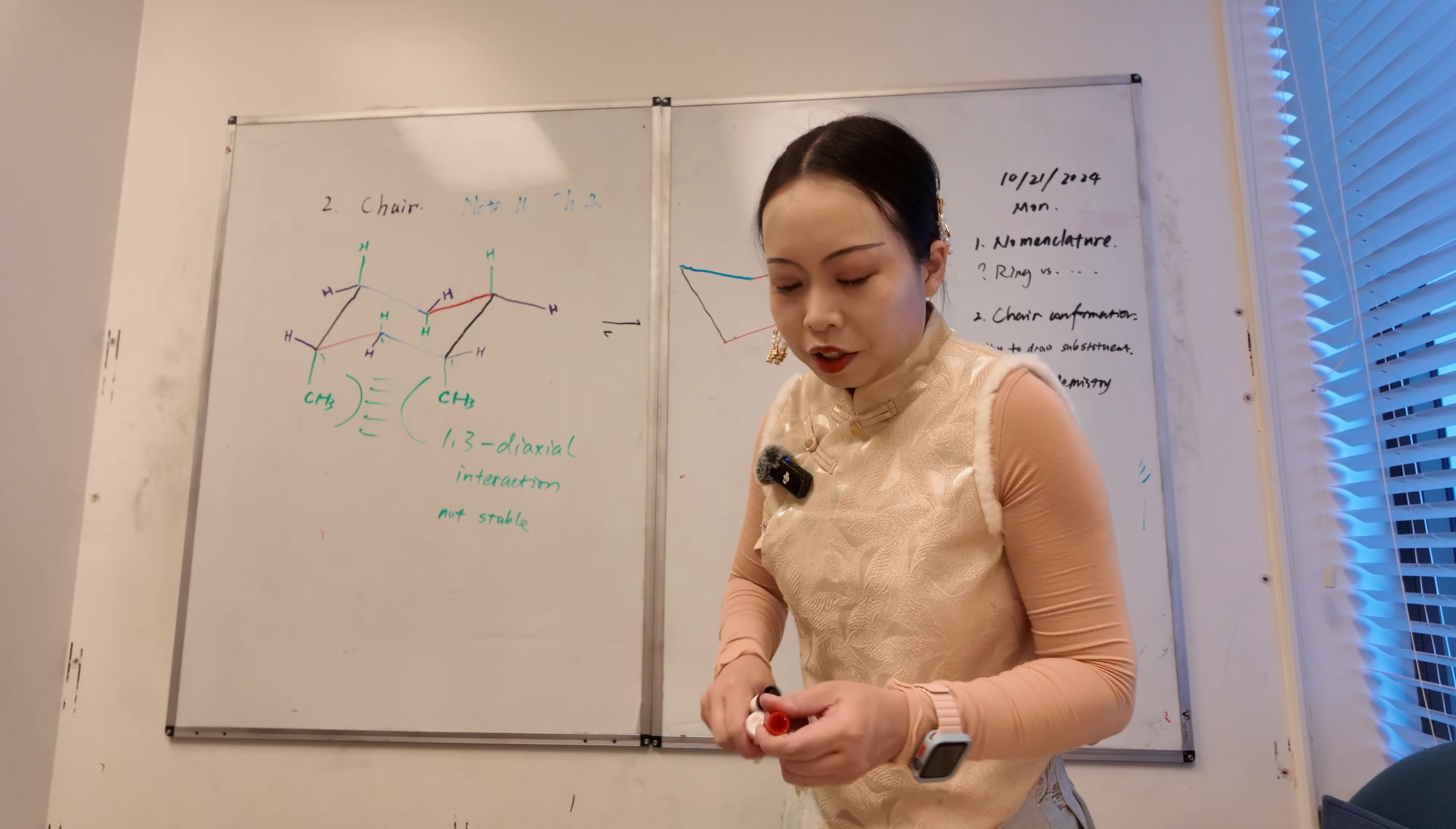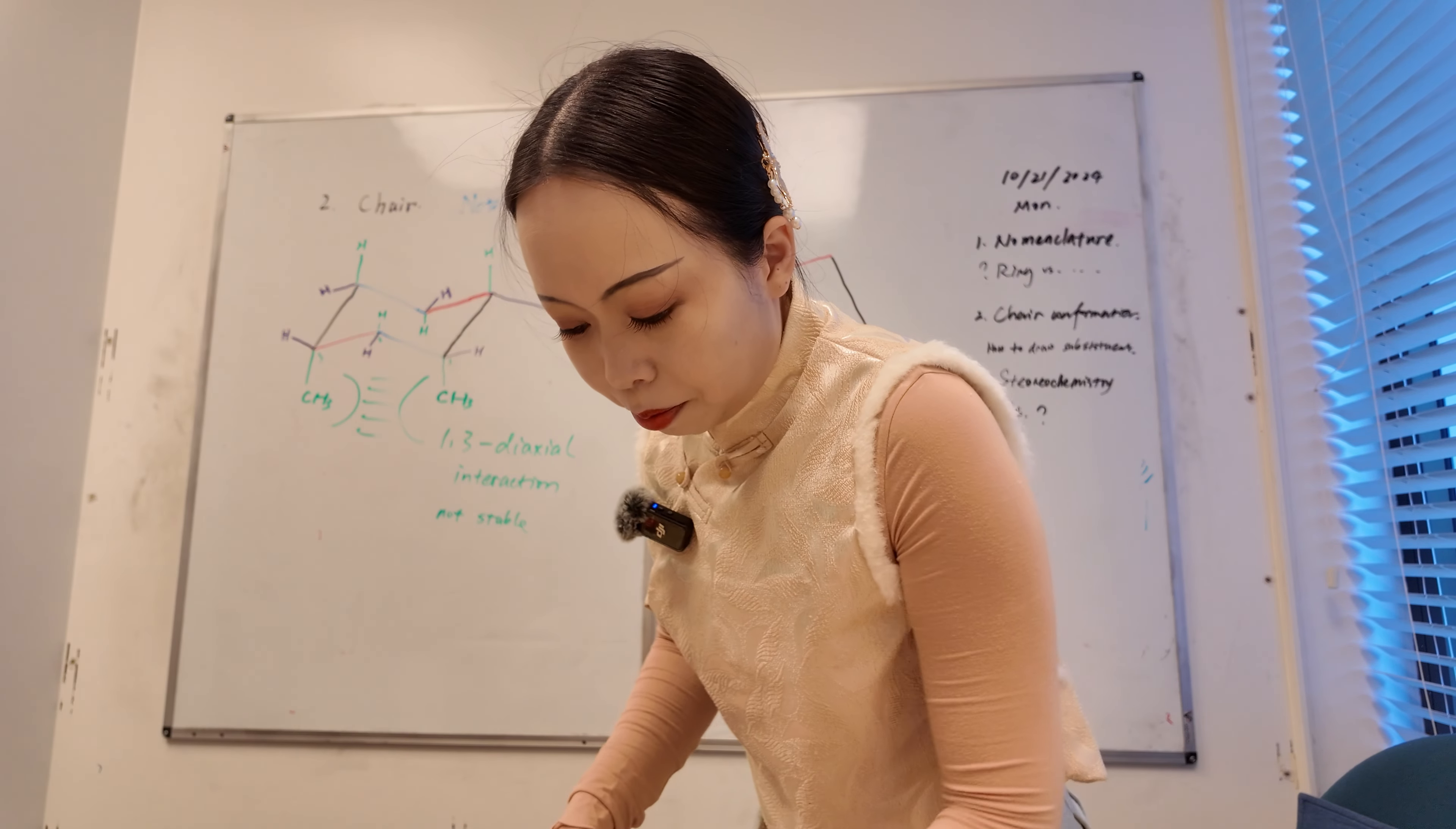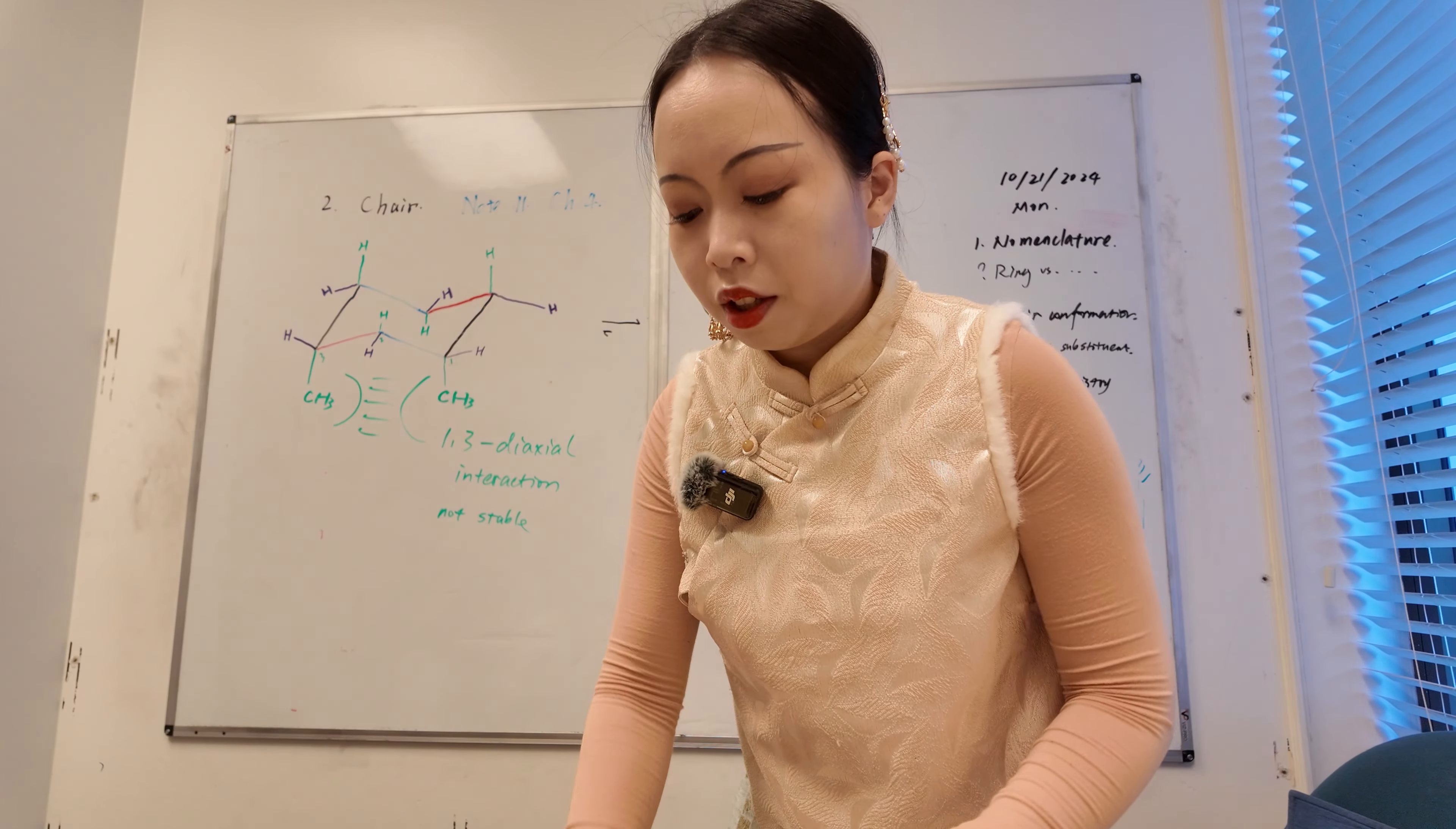So we are now going over the ring flip and start to practice with how to draw the equatorial and axial group.